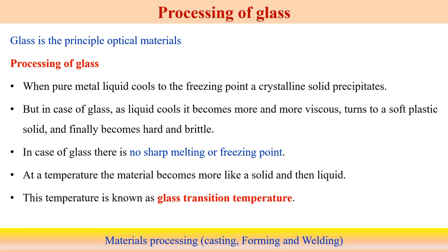We have already discussed the glass transition temperature. We cannot observe a very sharp melting or freezing temperature associated with glass, unlike metallic materials which have a sharp freezing or melting temperature. In the case of glass, at a particular temperature it becomes like a solid and then becomes liquid. When it is soft, we take the deformation of the glass. That particular temperature is known as the glass transition temperature, and we take this as our reference during processing, compared to the melting point temperature for metallic materials.